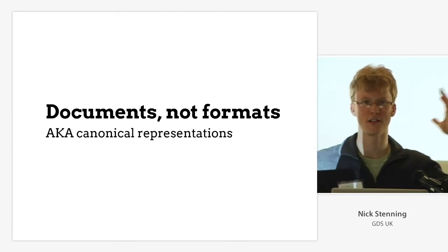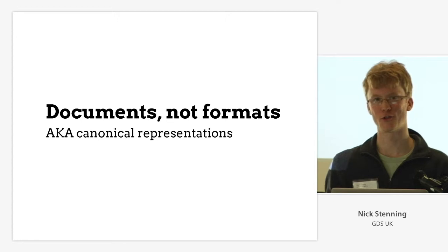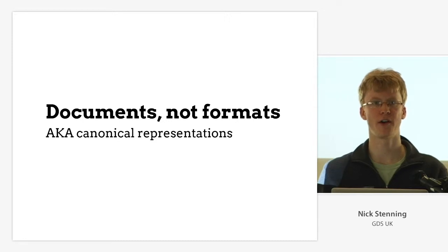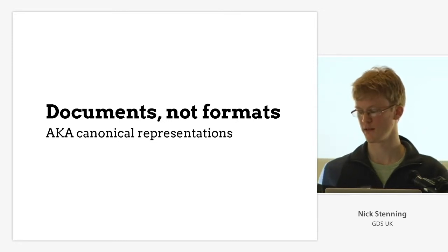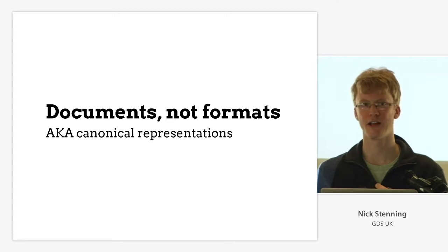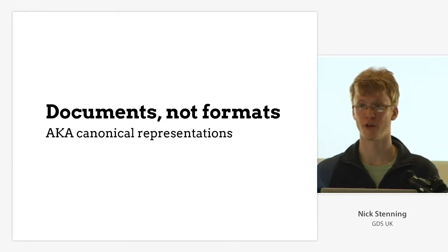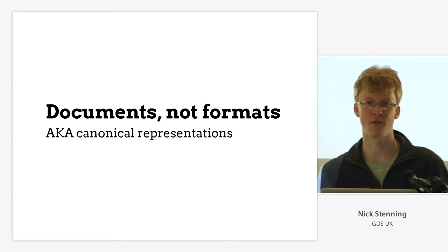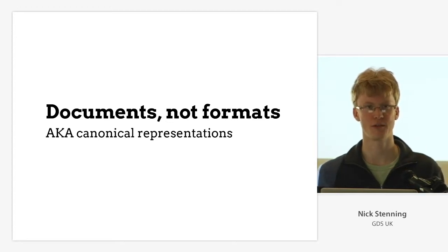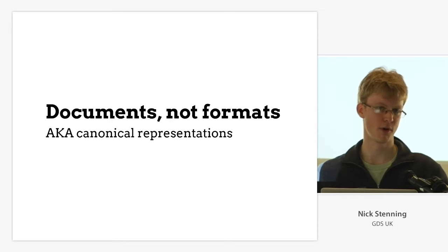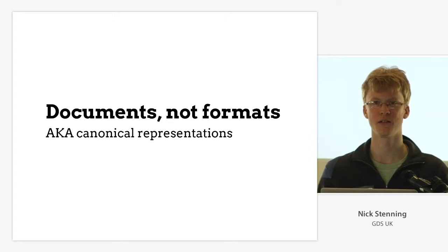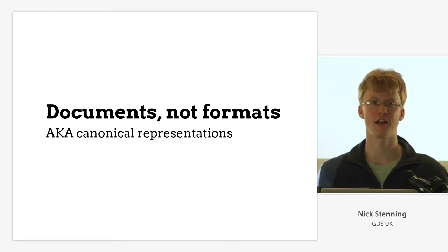Dan has already stolen my thunder on this by demonstrating the first interoperable PDF-HTML annotation format. That is the point. If I annotate a journal article as a PDF, those annotations should appear in the HTML version. And if I annotate a book on one page or on a Kindle, that should appear on another page or on a Nook. There are a couple of ways we might solve this: one is having some canonical representation, another is fuzzy anchoring — what I call content-addressed annotation, where you address an annotation by the content that it annotates.